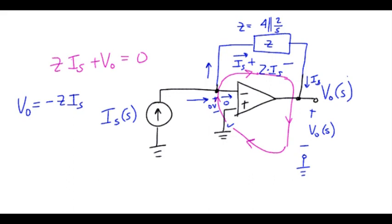So if we had, let me write this out a little bit more specifically then. Vout of S is minus 4 in parallel with 2 over S times I-S of S. So we need to find, of course, the estimated version of our input signal.